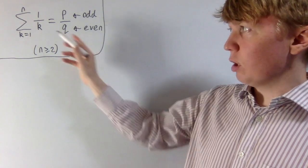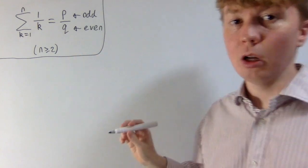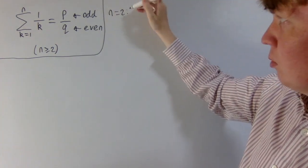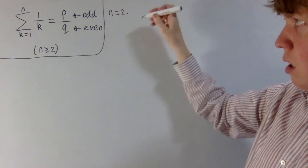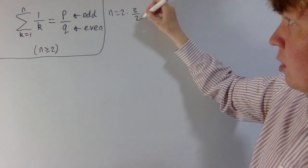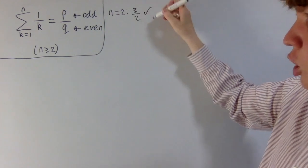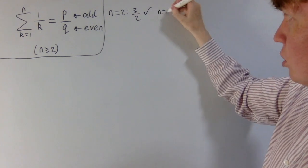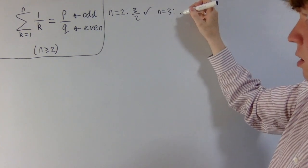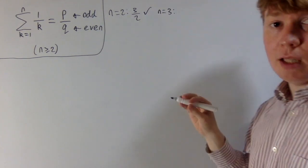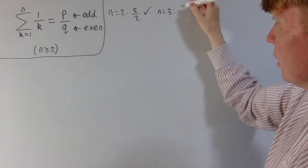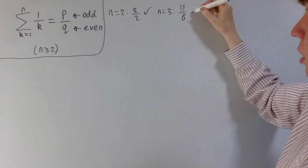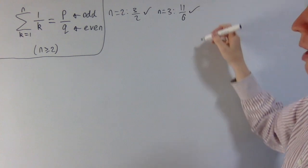When n is 1, this isn't going to work — you just have 1 over 1. For example, when n equals 2, we do 1 plus 1/2 and we get 3 over 2, which is indeed odd divided by even. Then when n is 3, we do 1 plus 1/2 plus 1/3, and when we write this as a single fraction and simplify, we get 11 over 6, which is again of this form odd divided by even.